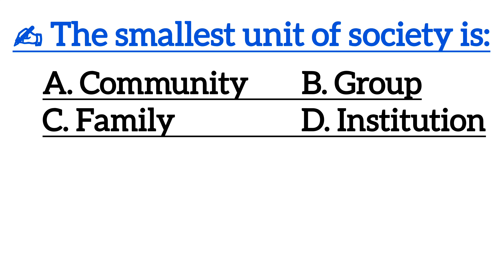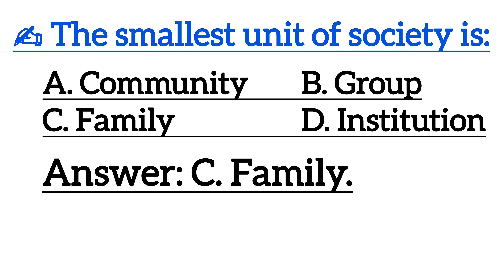Next one is: the smallest unit of society is? Correct answer is option C, family.